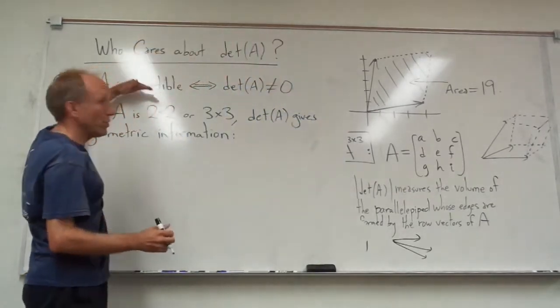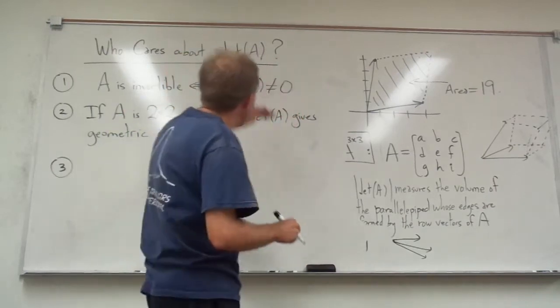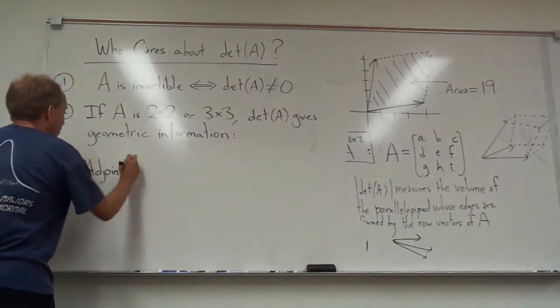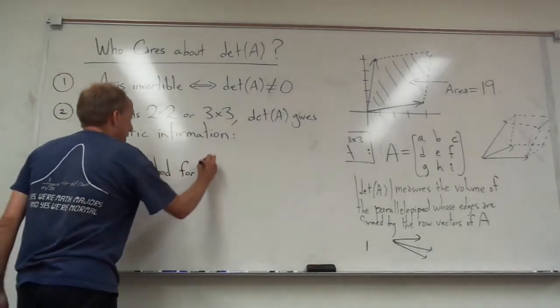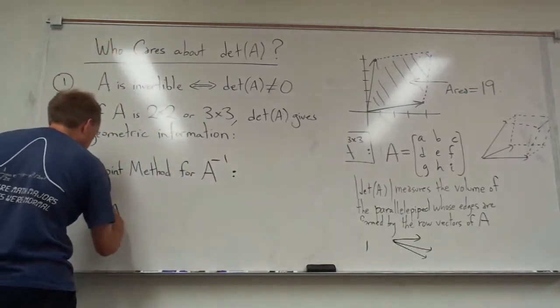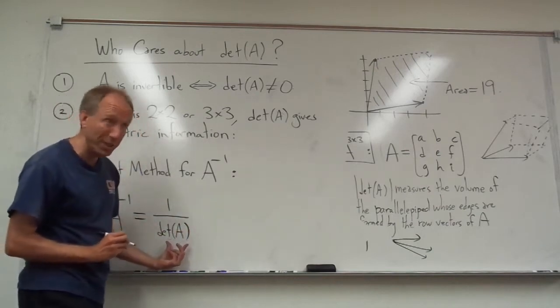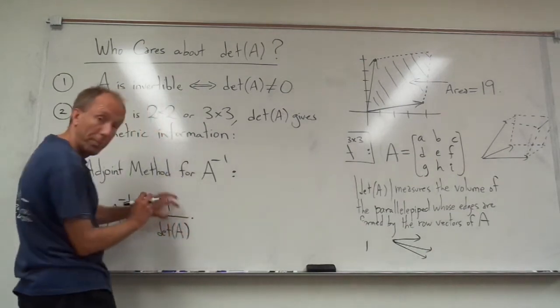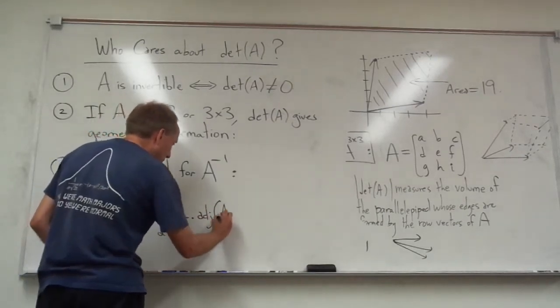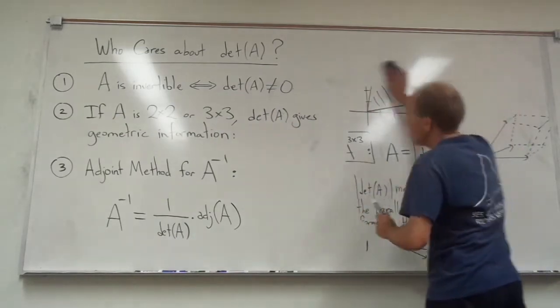We can test whether the matrix is invertible by calculating its determinant and seeing if it's not zero. But even better than that, if the determinant is not zero and we have an invertible matrix, we get what's called the adjoint method or adjoint formula for A inverse. I'm going to write down the formula first, and then I will explain it. The formula is the following: 1 divided by the determinant of A. That, of course, has to be non-zero on the bottom. Otherwise, this doesn't make any sense. This is just a number.